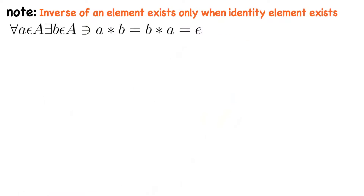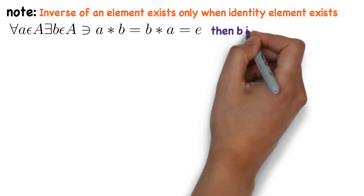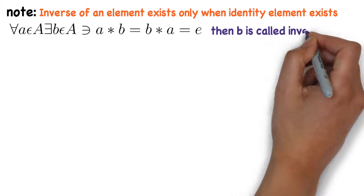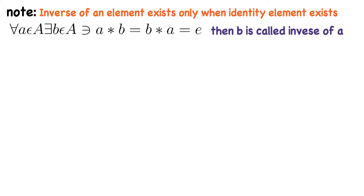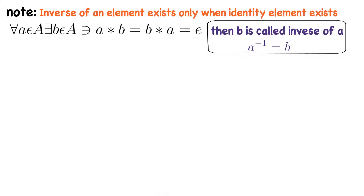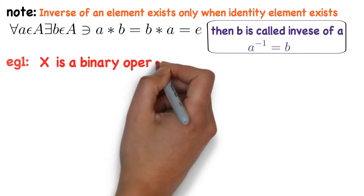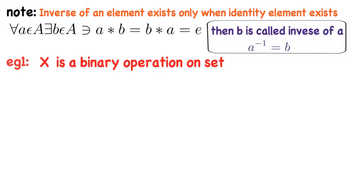To find the inverse of element A, there exists an element B in set A satisfying A star B equals B star A equals E; then B is called the inverse of A, denoted A inverse equals B. Now we will understand this with an example. Multiplication is a binary operation on the set of real numbers — let's verify.